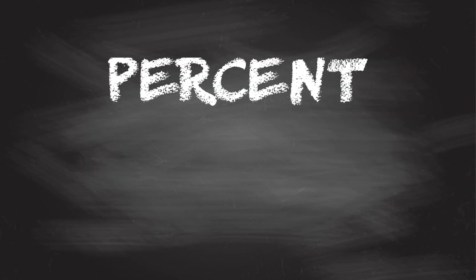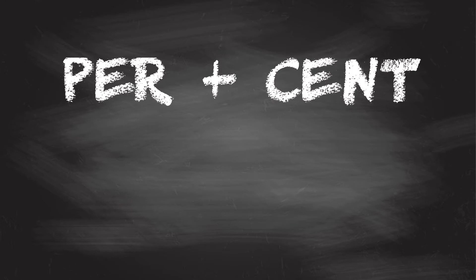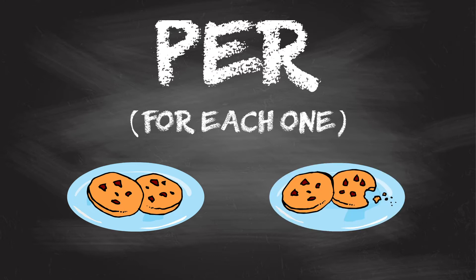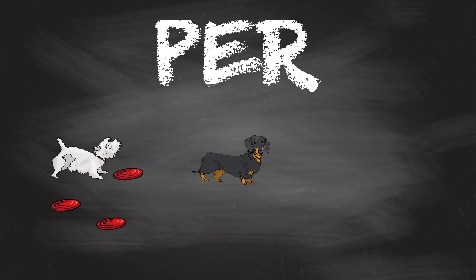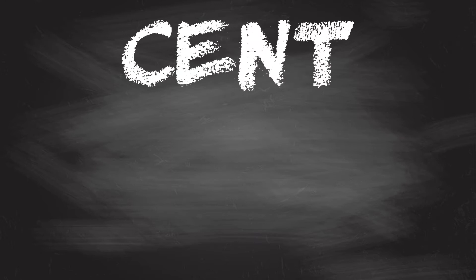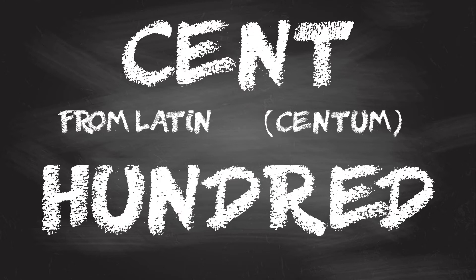Let's break down percent into per and cent. Per means for each one, like two cookies per person, or three Frisbees per dog. Cent goes back to Latin, which is an ancient language spoken in Italy, and the Latin word was centum, which means 100.